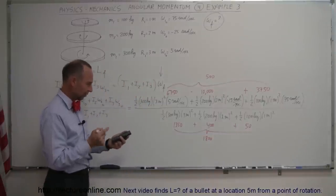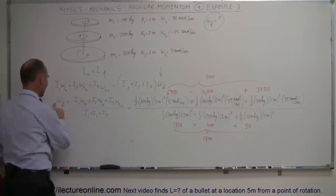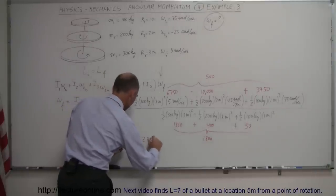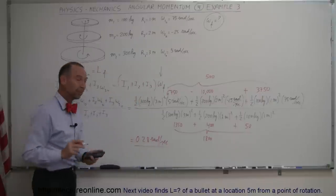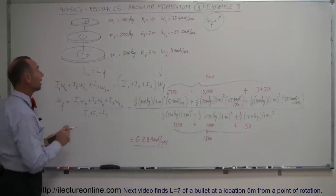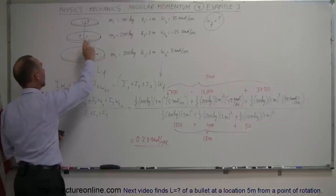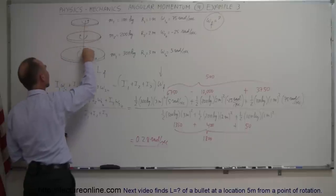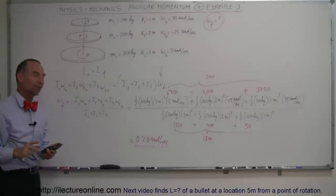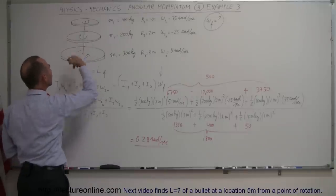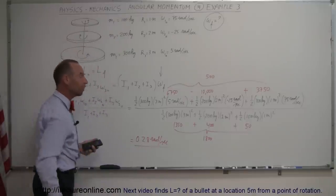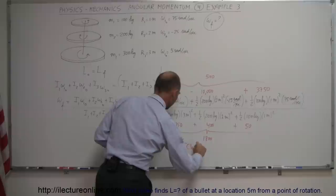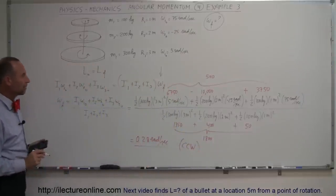500 divided by 1,800 gives a final angular velocity of 0.28 radians per second. Notice the result is positive, meaning counterclockwise direction. The initial angular momentum of the middle disk is almost enough to cancel out the other two, but not quite. So as a whole, all three disks will continue to rotate slowly at 0.28 radians per second counterclockwise (CCW).